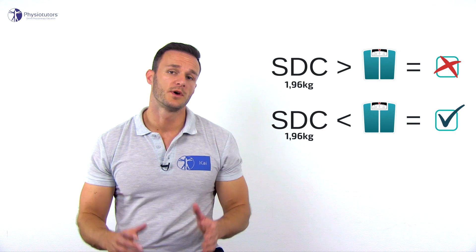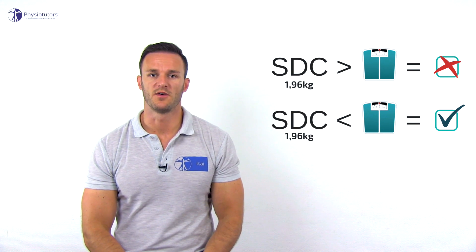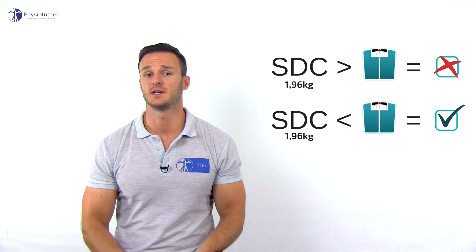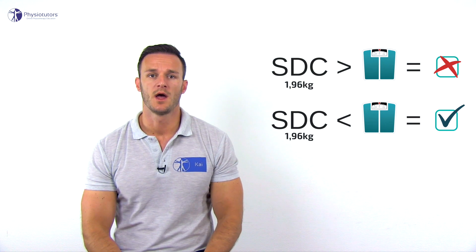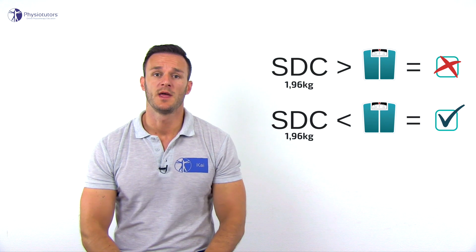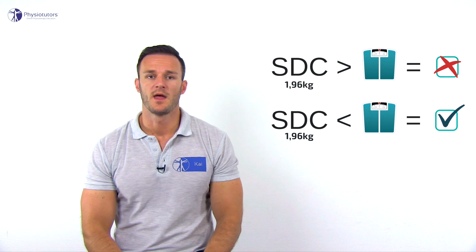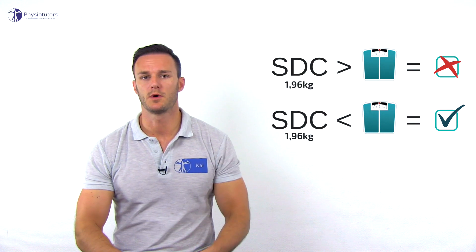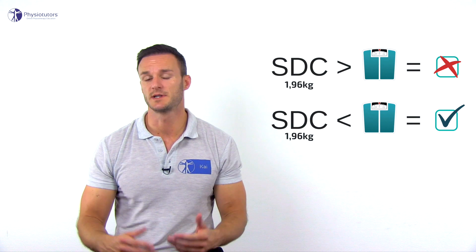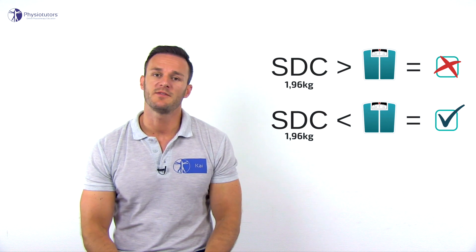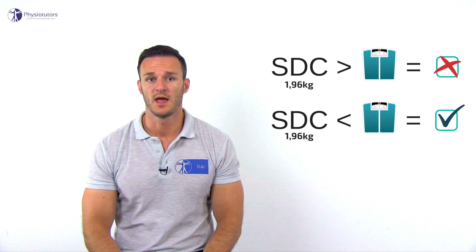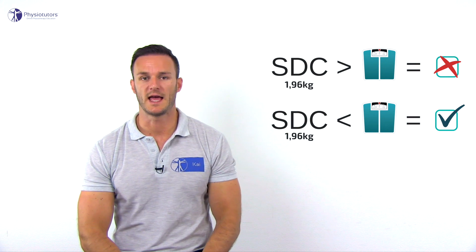In order to judge if a measurement error is big or small, we have to determine if we can detect clinically relevant changes with this measurement error. So if a person from our data set weighs himself on different days and the weight change is smaller than 1.96 kilograms, we can probably attribute this to the measurement error. If, however, he sees a weight change of more than 1.96 kilograms on this particular scale, we can be 95% sure that a real change has occurred, as it is bigger than the SDC.